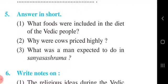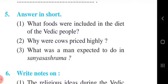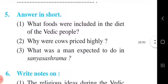Second question: Why were cows priced highly? First point: Milk and milk products were important items of the diet of the Vedic people. Second point: Cow was a means, or commodity, of exchange — they used to exchange goods. Therefore, cows were highly priced.